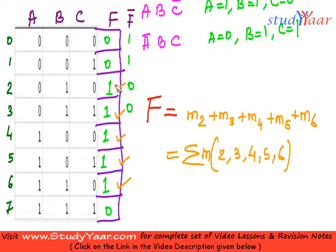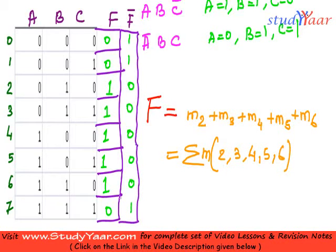First of all, let me just take these. I would like to remove these. Now I am going to fill it up. So this is going to be 0. This is going to be 0. This is going to be 0. And this is going to be 1. So let me just complete this table for F bar. It is something like this.